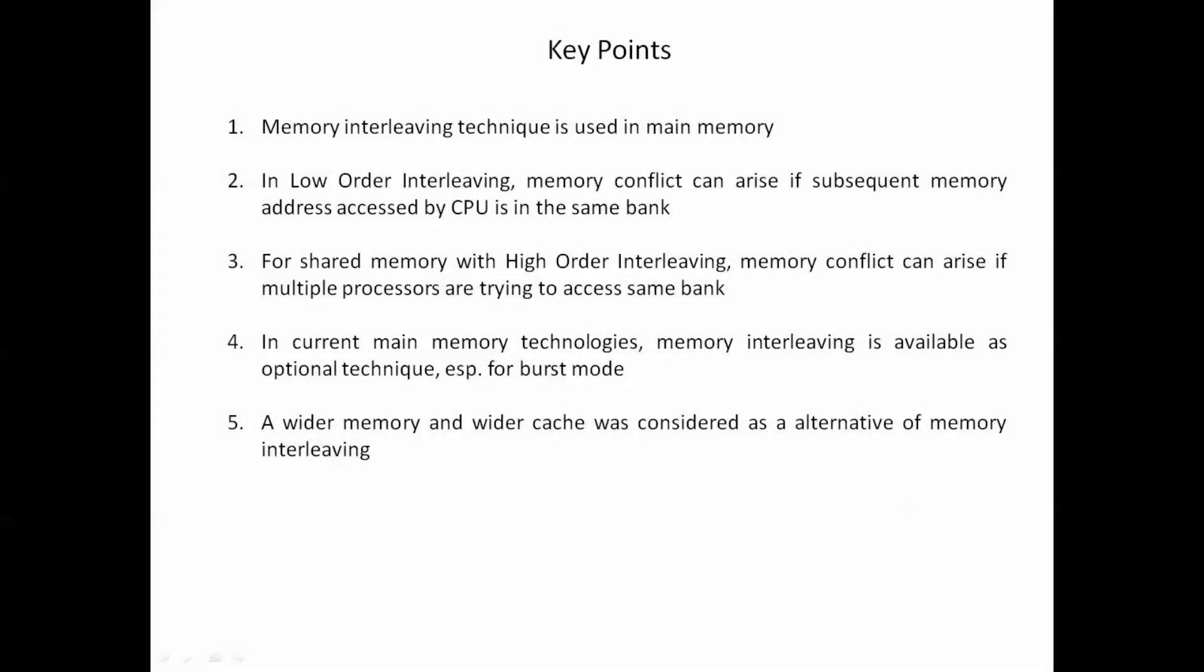To conclude, some of the key points are: memory interleaving technique is used in main memory. In low-order interleaving, memory conflict can arise if subsequent memory addresses accessed by CPU are in the same bank, which is called a bank conflict. For shared memory with high-order interleaving, memory conflict can arise if multiple processors are trying to access the same bank. In current main memory technologies like DDR, memory interleaving is available as an optional technique, especially for burst mode. A wider memory and wider cache was considered as an alternative to memory interleaving.